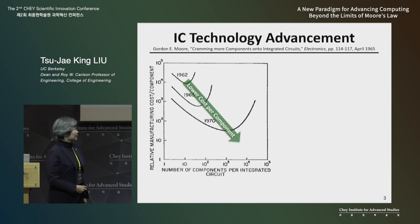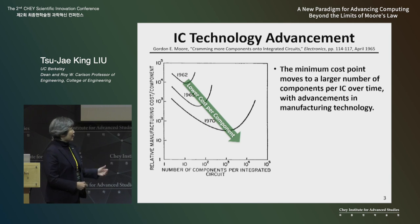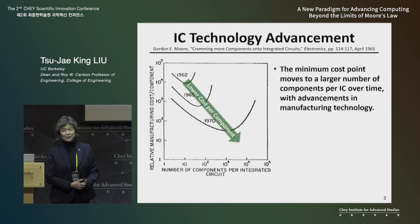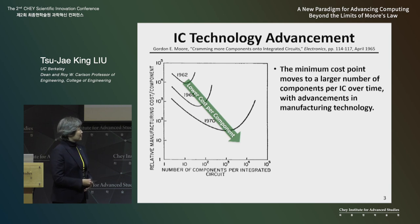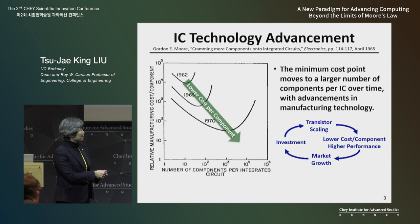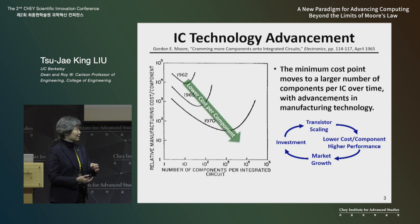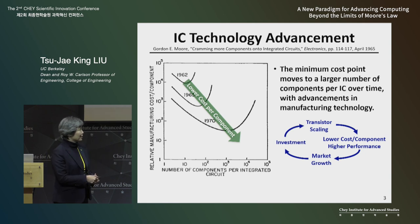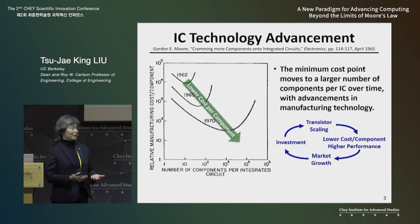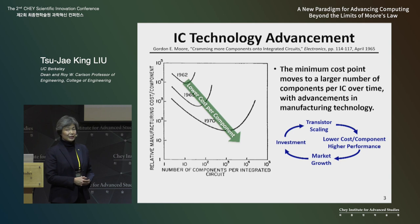Moore's Law is really an economic law — how do we minimize the cost of manufacturing these components? So over time, if we can advance the technology to make smaller and smaller transistors and fit more and more on an integrated circuit chip, the chip becomes more functional. We have lower cost per function, and this enables engineers to design new products and to grow new markets for electronics.